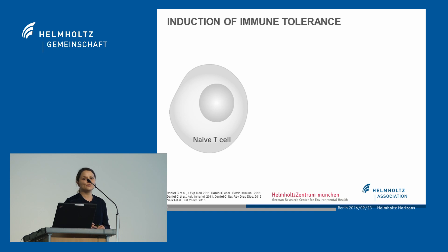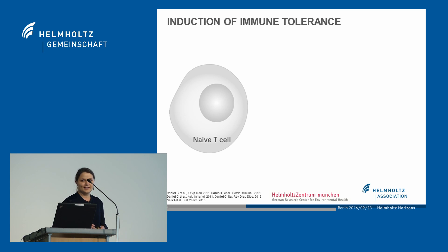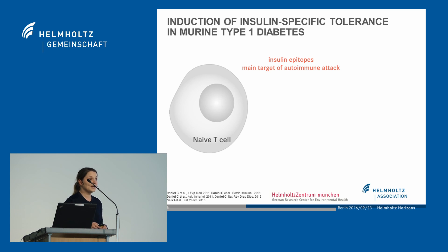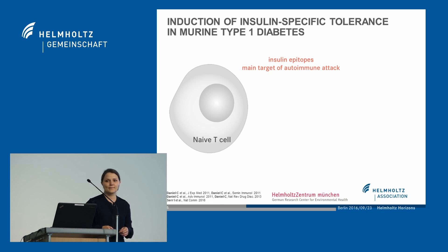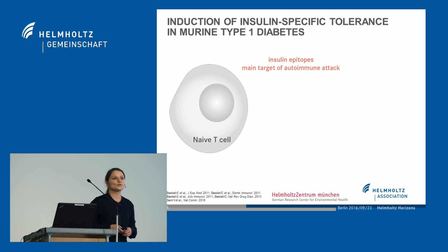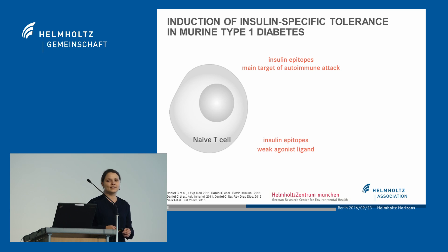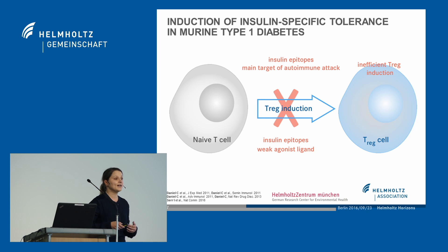How can we induce these regulatory T cells? We showed that this works best using naive T cells, stimulation with a strong agonist ligand provided under so-called subimmunogenic conditions, which results in efficient T-rex induction. Since insulin epitopes are the main target of the autoimmune attack in type 1 diabetes, we focused on insulin-specific T-rex induction. However, it became clear that those epitopes are not strong but rather weak agonistic ligands, which resulted in impaired T-rex induction.